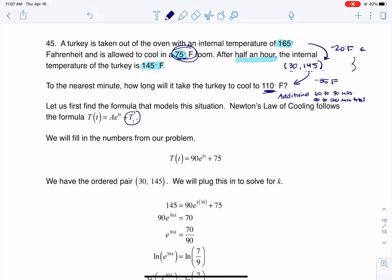So A, it's the difference of your object's temperature. So my turkey was initially 165, and the surrounding temperature was 75, and that difference is 90. So that's where you see me getting this model for Newton's law of cooling.